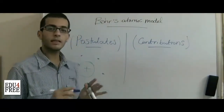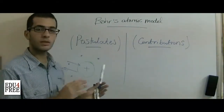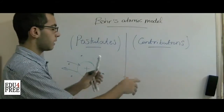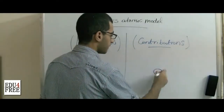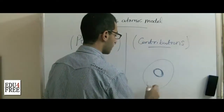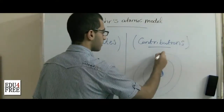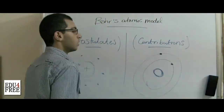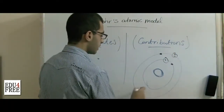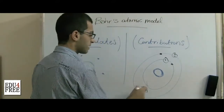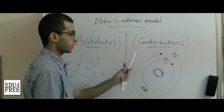Second contribution: he said that electrons orbit the nucleus in definite energy levels, so we cannot find an electron in any space other than these energy levels. For example, if this is the nucleus and we have one energy level and another one, we cannot find an electron orbiting in between those levels — he said that is simply not possible.